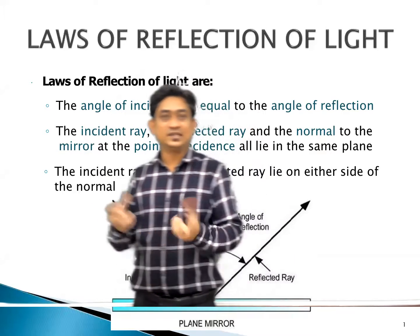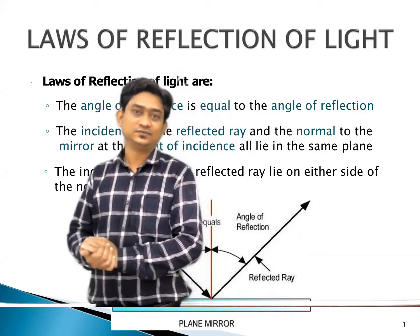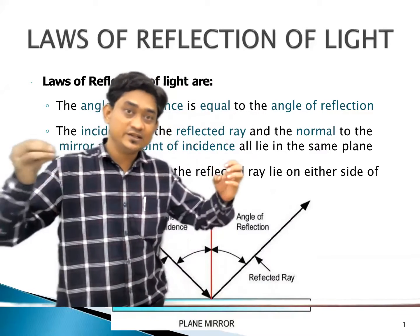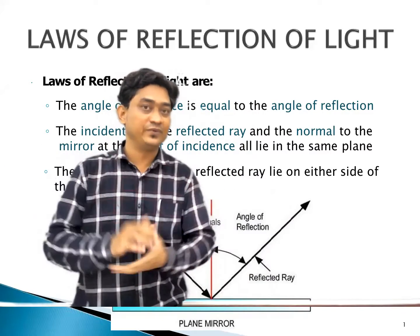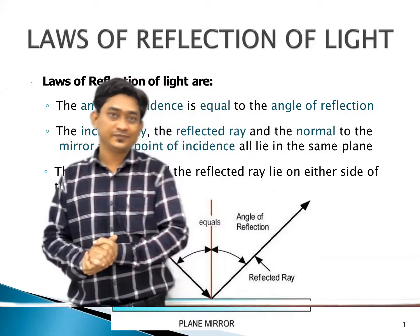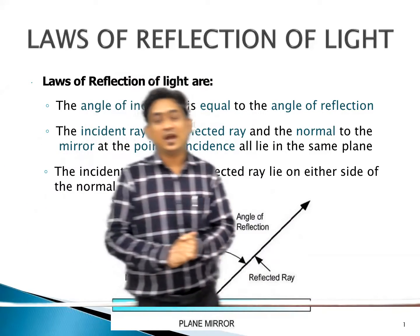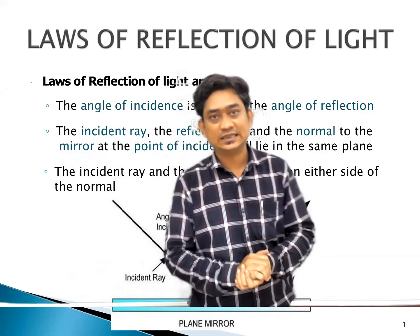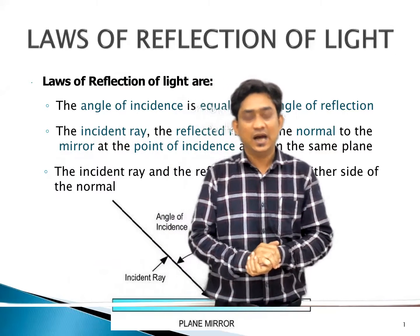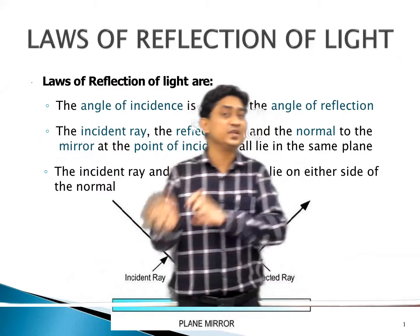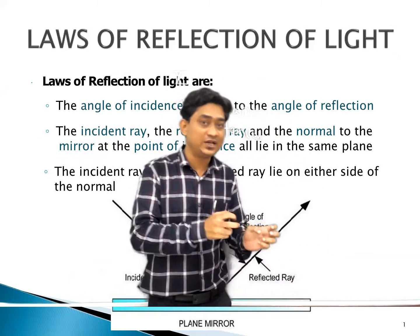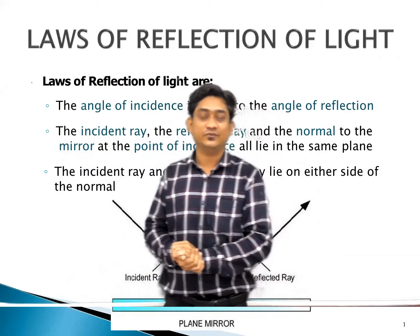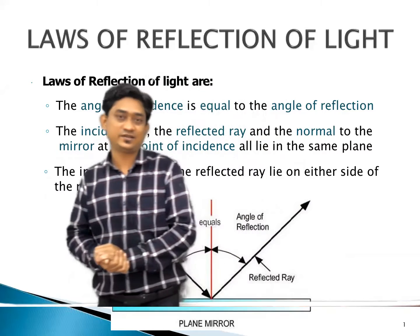We know very well what is light. Light means it is just a form of energy which is visible to us. And what is the difference between reflection and diffraction? We already discussed.